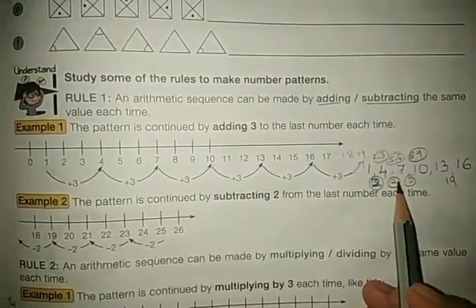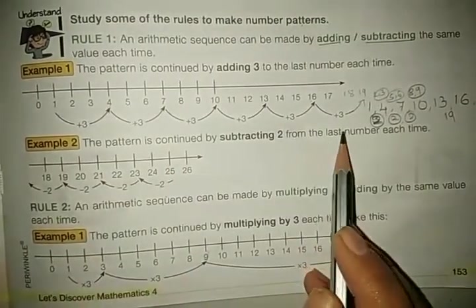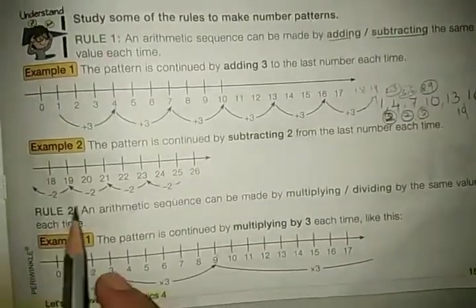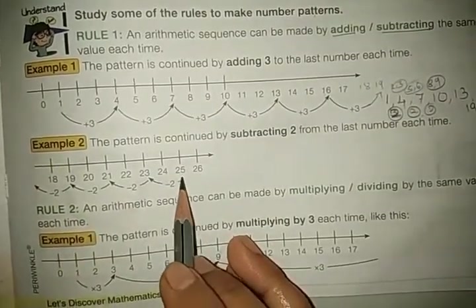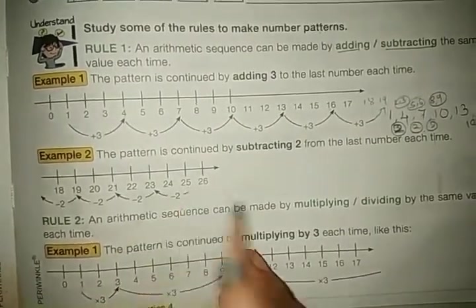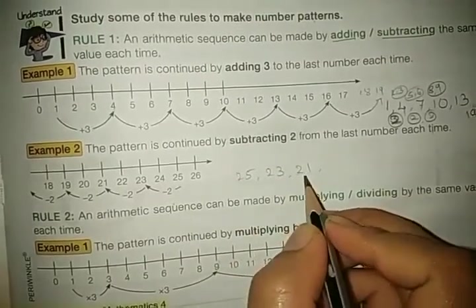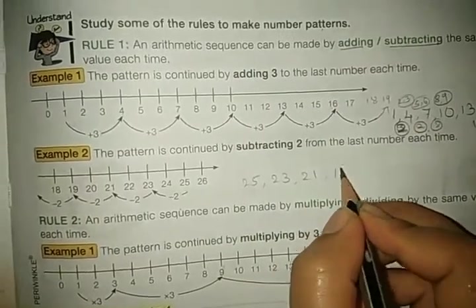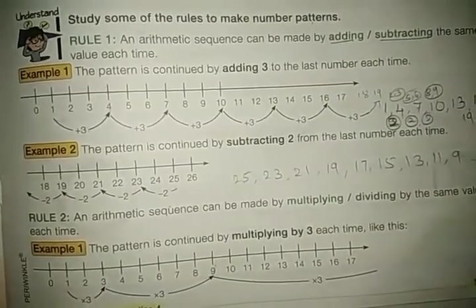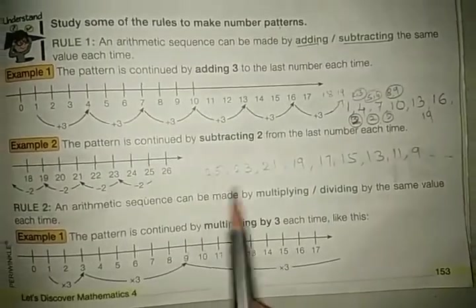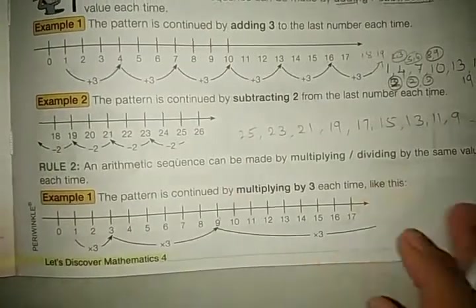We can study these number patterns by skipping also, or by adding or subtracting. Now the next pattern: the pattern is continued by subtracting two from the last number each time. Here they started from twenty-five and each time subtracted two. Twenty-five, twenty-three, twenty-one — this is also an odd number sequence in reverse. Twenty-five, twenty-three, twenty-one, nineteen, seventeen, fifteen, thirteen, eleven, nine — a reverse odd number pattern.